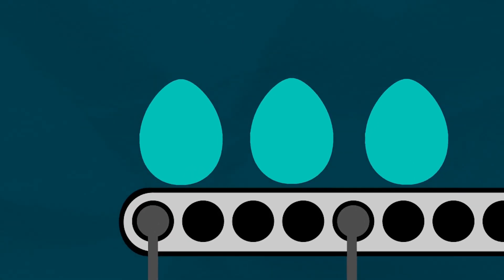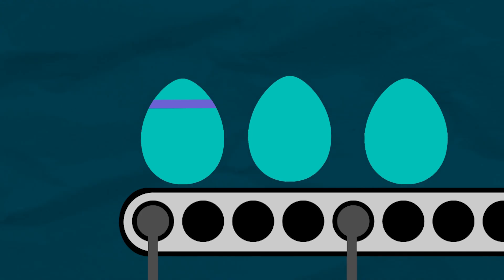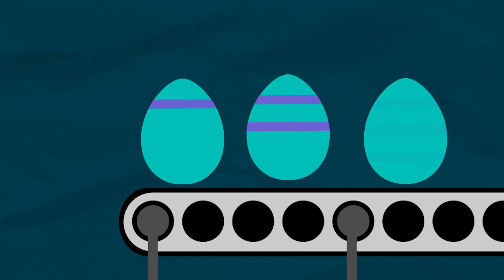Say there are three eggs arranged side to side on a moving conveyor. Egg one has one line drawn on it, egg two has two lines, while egg three has three lines.